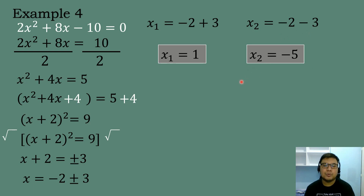So we have two roots: the first is positive 1 and the second is negative 5.